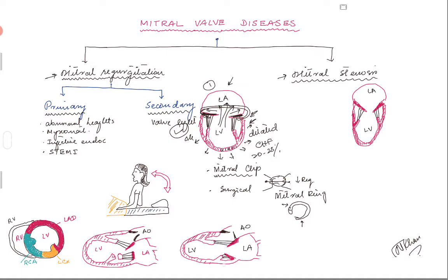Returning to primary mitral regurgitation - focusing on patients who have a normal valve that gets damaged. Say somebody comes with an inferior wall MI. In picture two, I have a cross-section of a left ventricle cut in short axis: this is your LV, this is your RV, this is the interventricular septum, this is your inferior wall, this is your lateral wall, and this is your posterior wall.